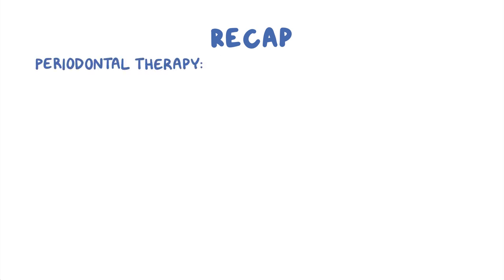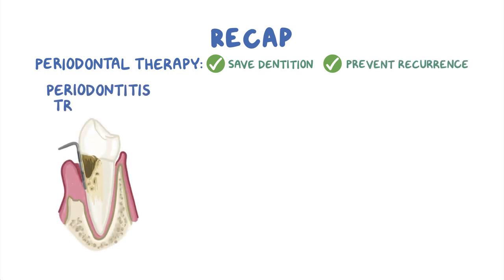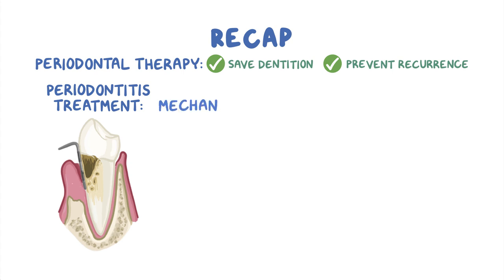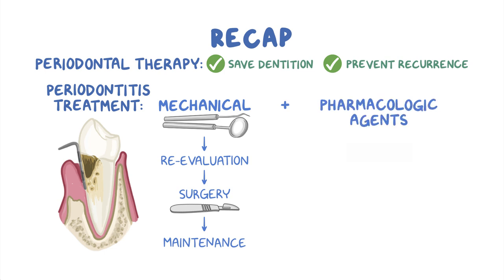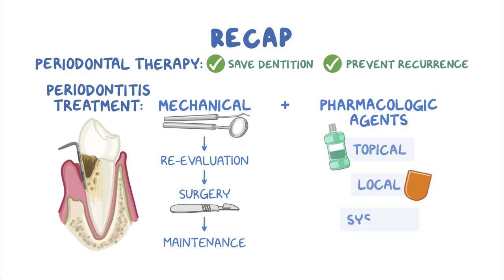As a quick recap: the primary goal of periodontal therapy is to preserve the natural dentition and periodontium, but also to prevent recurrence of the periodontal disease. Periodontitis is generally treated using a mechanical approach, which involves scaling and planing the teeth, re-evaluating the result, possible follow-up periodontal surgery, and a periodontal maintenance program. Pharmacologic agents can be used as adjuncts to the conventional mechanical approach. Based on the type of delivery, medications used in the treatment of periodontitis can be subdivided into topical, local, and systemic medications.